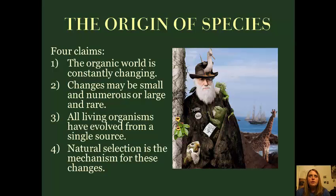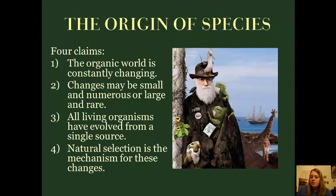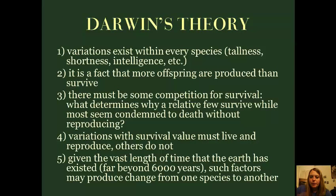Darwin says that the changes can be small and numerous, or they can be large and rare — there are changes of both types. But the big part is that all living organisms have evolved from a single source, and natural selection is the mechanism for all of the changes that have occurred naturally.